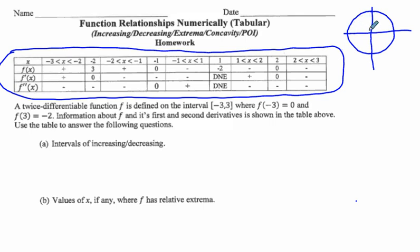In quadrant one, the curve going left to right is going down and is also concave down, so we say negative-negative. In quadrant two, going left to right, we are increasing but concave down. In quadrant three, we are decreasing but concave up. In quadrant four, we are increasing and concave up. This is going to help us as we sketch our curve.